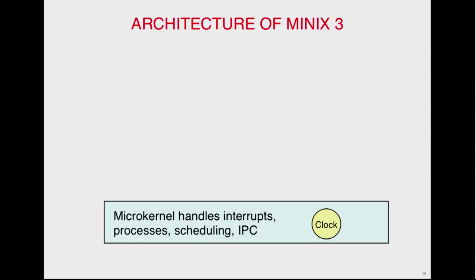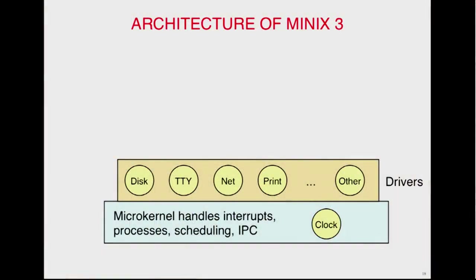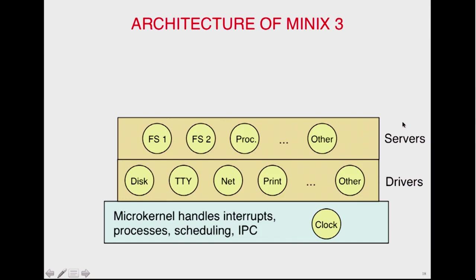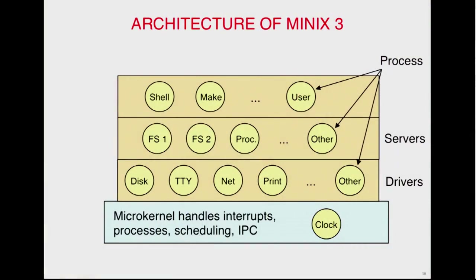Here's the architecture of Minix in a nutshell. The bottom layer is the microkernel — it handles interrupts, processing, scheduling, the clock, interprocess communication, the low-level stuff. Next level up are user-level processes, all running protected by the MMU as normal processes: the disk driver, terminal, networking, printing, and all other drivers. Above that are the servers — the virtual file server, actual file servers, process manager, memory manager — all running as separate isolated processes. Above that are the true user processes running shells and other user applications.